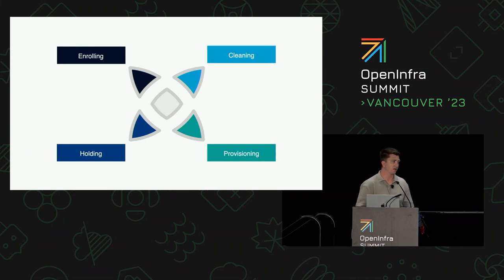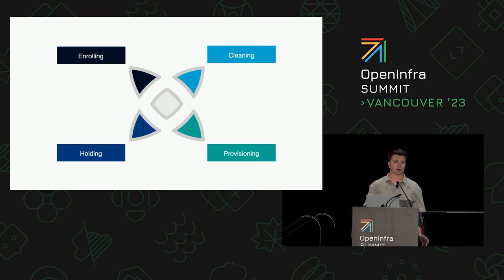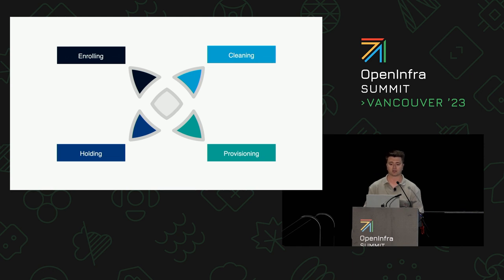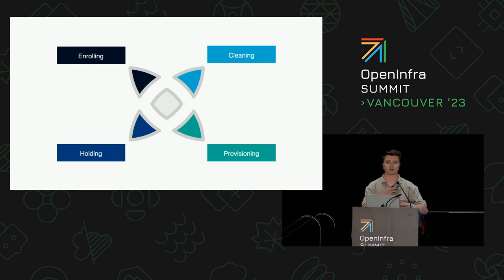The four main Ironic states we care about are: enrolling, cleaning, holding, and provisioning. There are some transitional states in between, but when a bare metal node is provisioned it's given to the user, and when it's deleted it's cleaned and removed back into the holding state — clean and in the same state as before. At G-Research we try to have our nodes handed back once a month. The user takes the nodes, uses them — usually running Kubernetes workloads — then they come back, get cleaned, get put into the available pool, and the cycle continually repeats.